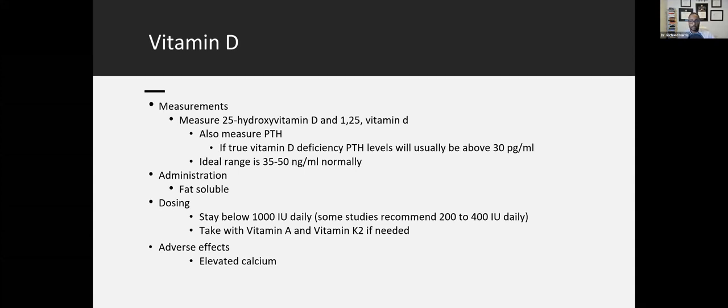But another thing that you can do and something that's not done commonly is measure something called PTH or parathyroid hormone. Parathyroid hormone's main job is to help the body regulate calcium levels. Calcium is a very powerful messenger in the body, and so our body really likes to keep calcium levels regulated. And so if your parathyroid hormone is elevated, then that usually indicates that you have a vitamin D deficiency.